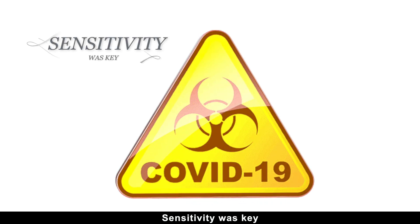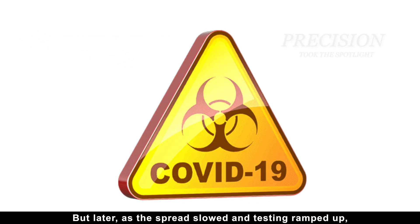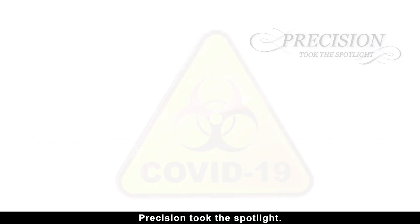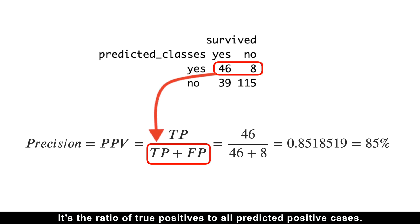During the early days of the COVID-19 pandemic, sensitivity was key to catching as many infected people as possible. But later, as the spread slowed and testing ramped up, precision took the spotlight. To calculate precision, we focus on the top row of the confusion matrix, the predicted positives. It's the ratio of true positives to all predicted positive cases.